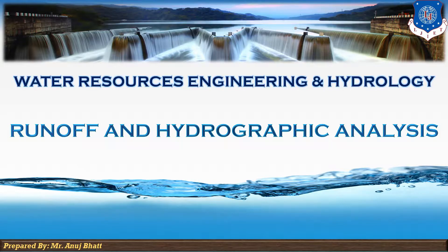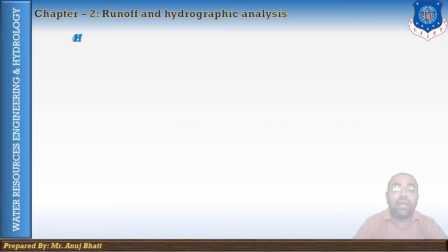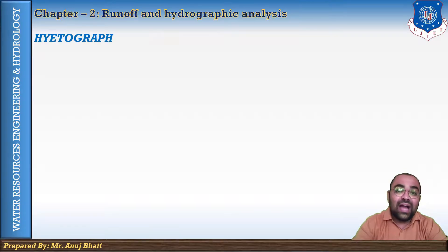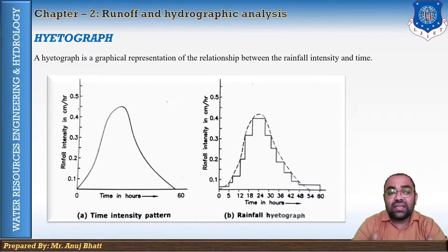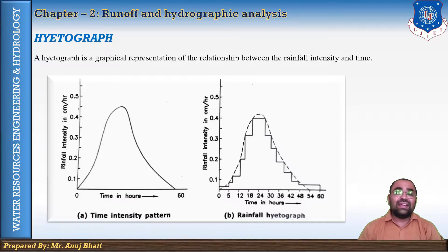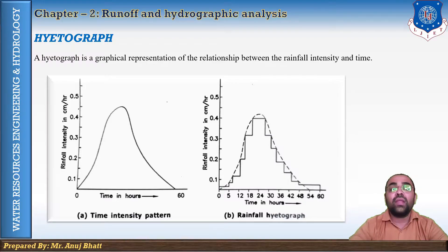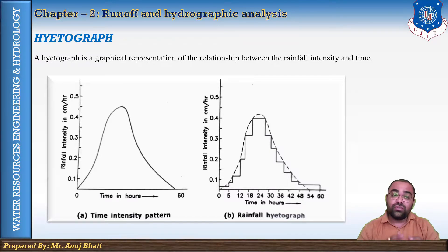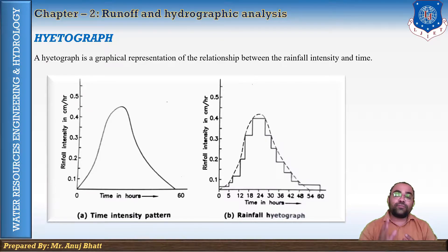We will start the lecture with the first graphical representation for rainfall, and that is the hydrograph. A hydrograph is a graphical representation of the relationship between the rainfall intensity and the time. It is a graph of rainfall intensity drawn on the ordinate axis against the time.